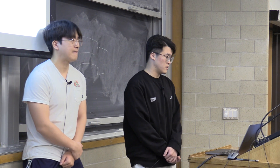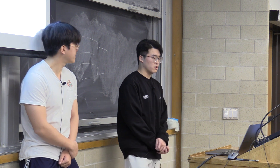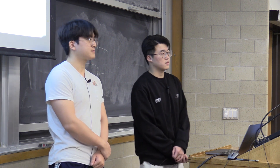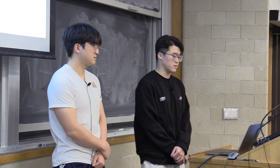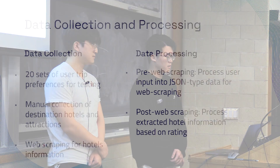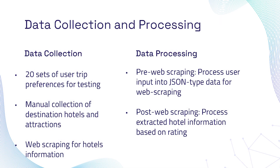This is based on GPT-4, so we didn't need any training data to train the model. For testing, we manually generated 20 sets of user trip preferences and manually collected the relevant hotels and attractions online that match those preferences. During the plan-making process, the software will also collect hotel information by doing web scraping.